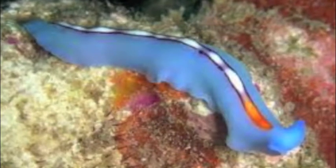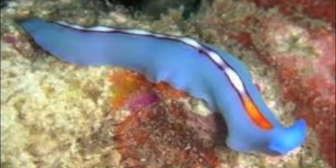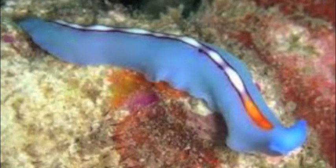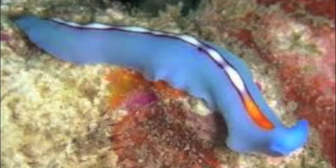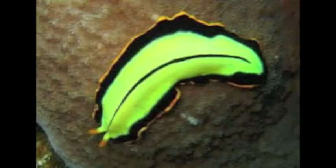Platyhelminthes are motile and have bilateral symmetry, which means a single line can divide the body into two equal parts. They reproduce asexually through regeneration.